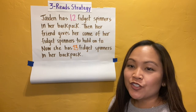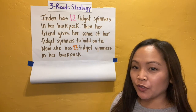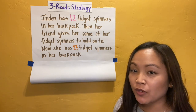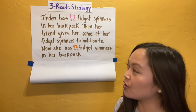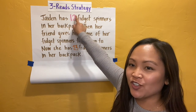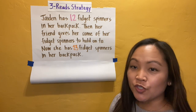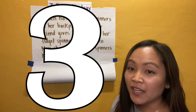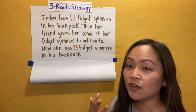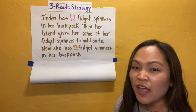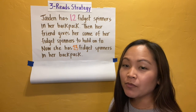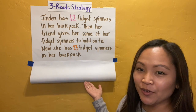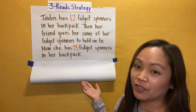Hi, everyone. Today we're going to review how to solve word problems using a strategy called the three-read strategy. This strategy is great because not only do we read the problem three different times, but it helps us really make sense of what the word problem is about and what exactly the word problem is asking us to do. So I've written down a problem for us to read and we are going to read it three different times.